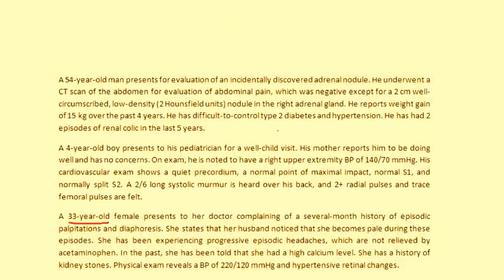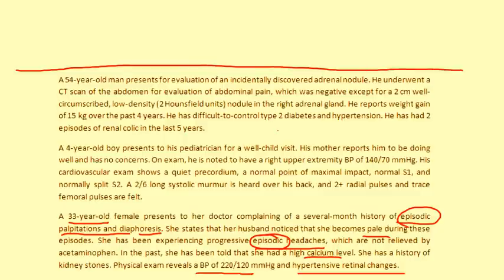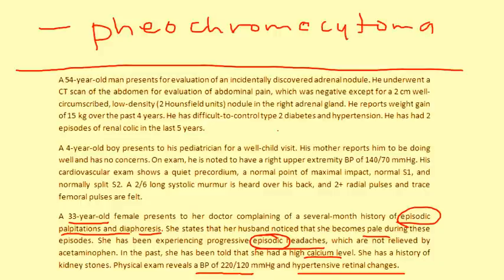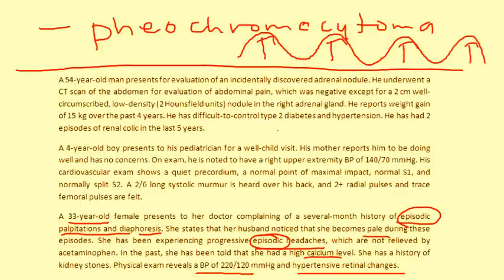Clinical vignette three: A 33-year-old female presents with several months of episodic palpitations, diaphoresis, and pallor during episodes. She has progressive episodic headaches unrelieved by acetaminophen, a history of high calcium levels and kidney stones, and a blood pressure of 220 over 120 with hypertensive retinal changes. The key word is episodic — this points to pheochromocytoma, a tumor of the adrenal medulla secreting epinephrine and norepinephrine episodically.